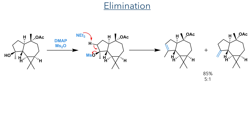This alcohol could then be eliminated by first reacting it with mesyl chloride and DMAP. This mesylates the hydroxyl group, and the addition of triethylamine deprotonates the molecule on the face anti to the mesylate group, promoting an elimination to form an alkene. This formed the desired alkene together with the undesired exo-alkene with a 5-to-1 ratio.